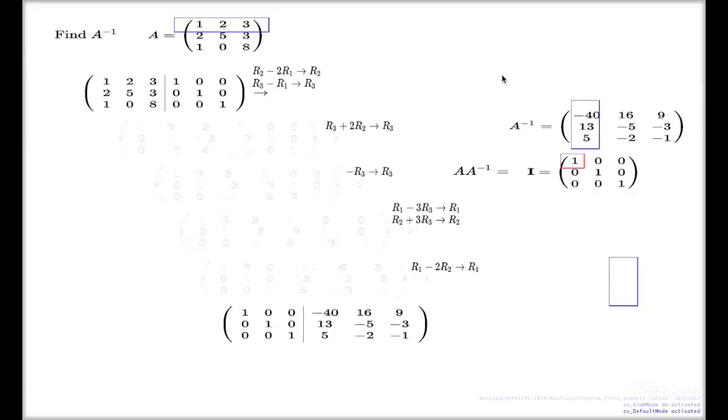So here's my double check. First column here, first row here, first column here. I have to take the dot product then. If I do that, it will be negative 40 plus 26 plus 15. Yes, negative 40 plus 26 plus 15. It is 1.